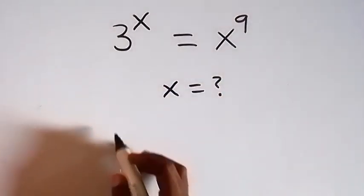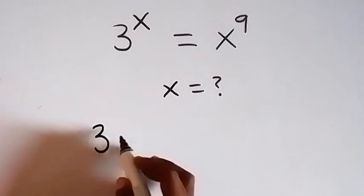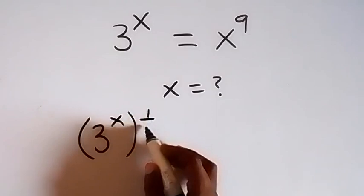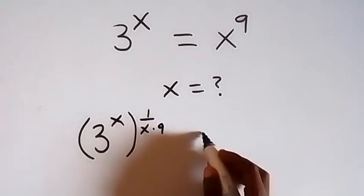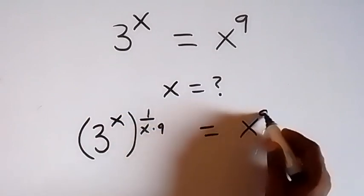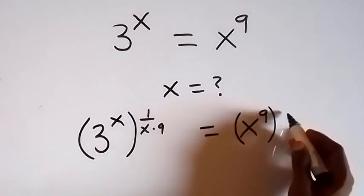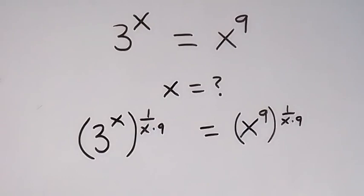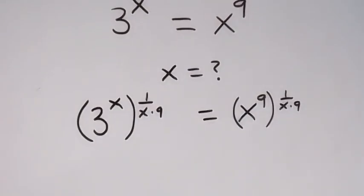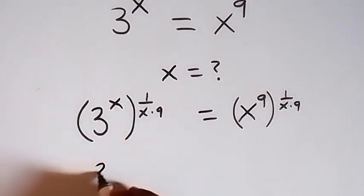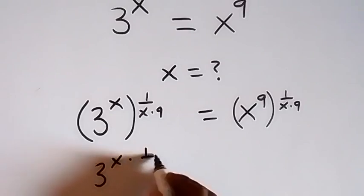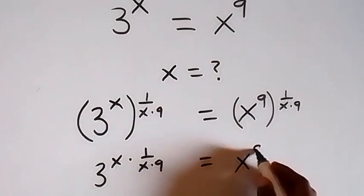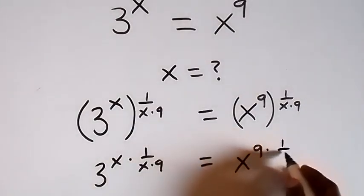Here we can multiply both powers by 1 over x times 9. That is, we have 3 raised to power x, then raised to power 1 over x multiplied by 9, and also here we have x raised to power 9, raised to power 1 over x times 9. So we have multiplied both sides with this power. From the law of indices, this is the same as 3 raised to power x times 1 over x times 9, and also equals x raised to power 9 times 1 over x times 9.